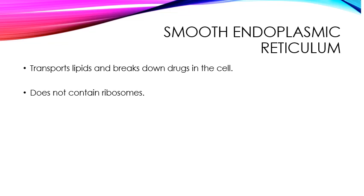The smooth endoplasmic reticulum, this will not have any sort of structures on its surface. It transports proteins and it also transports lipids and carbohydrates. It is especially important in terms of the lipids. It will break down drugs that are found in the cell. It does not contain ribosomes, so it does not have any sort of structures on its surface.